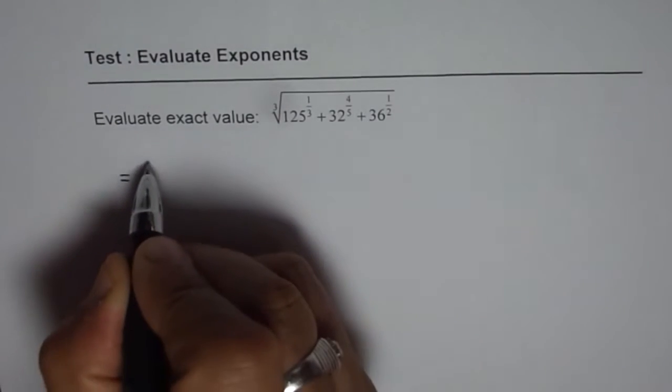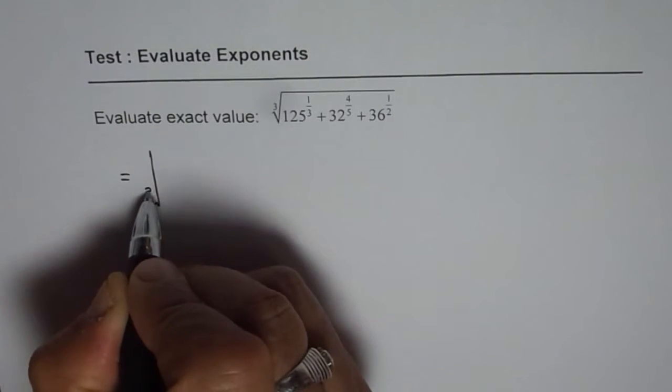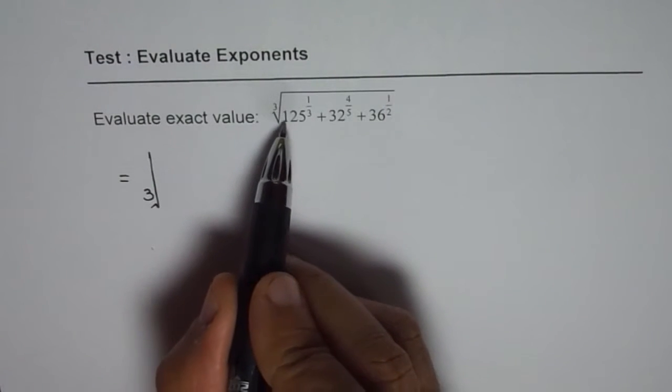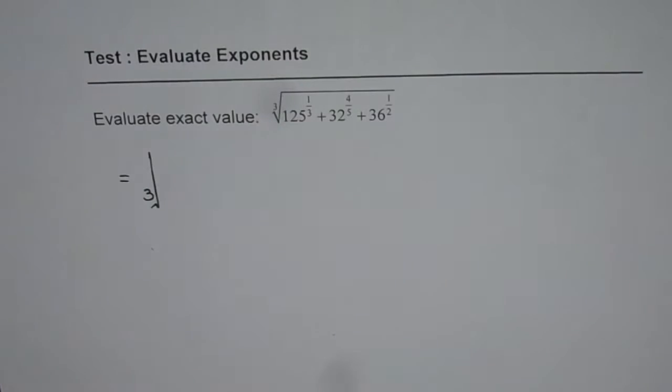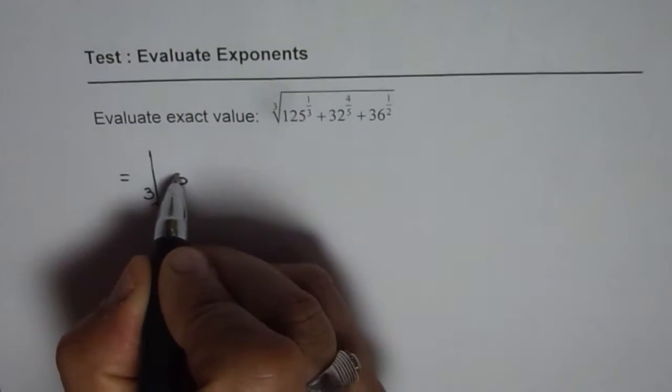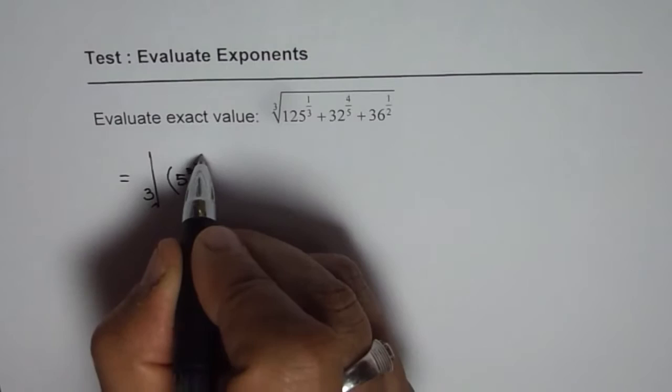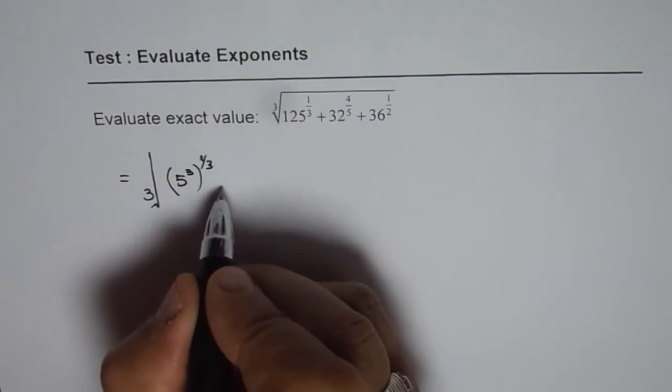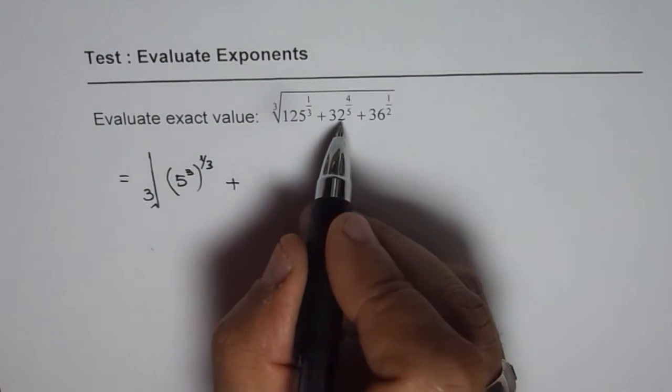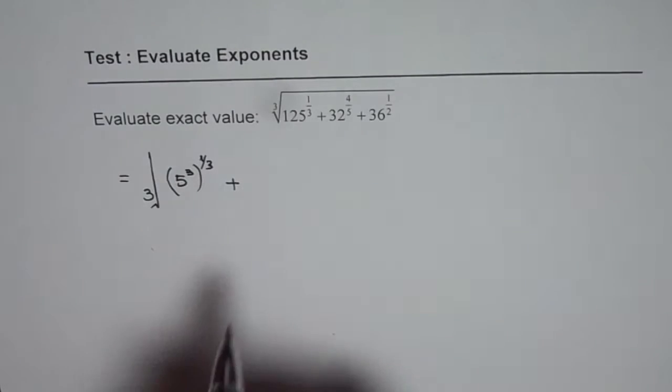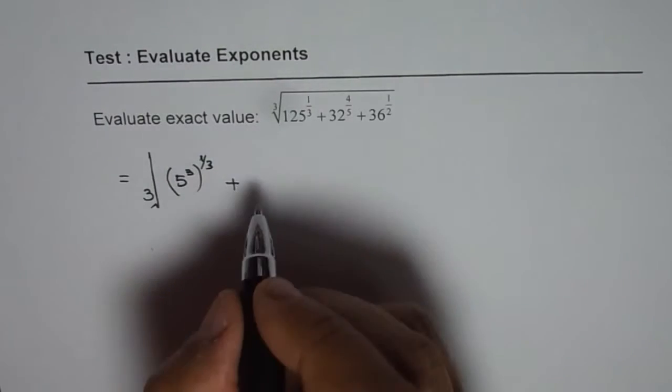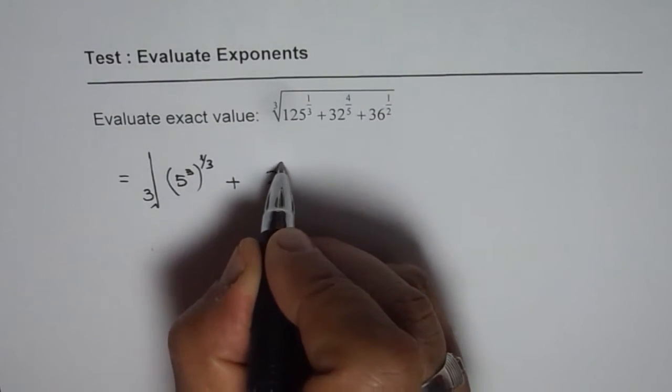So we can rewrite this. Let me rewrite it as cube root of 125 could be written as 5 cube. So I will write this 125 as 5 cube and I have to the power of 1 over 3. Then plus 32 to the power of 4 over 5. 32 can be written as 2 to the power of 5. So we have 32 as 2 to the power of 5 to the power of 4 over 5.